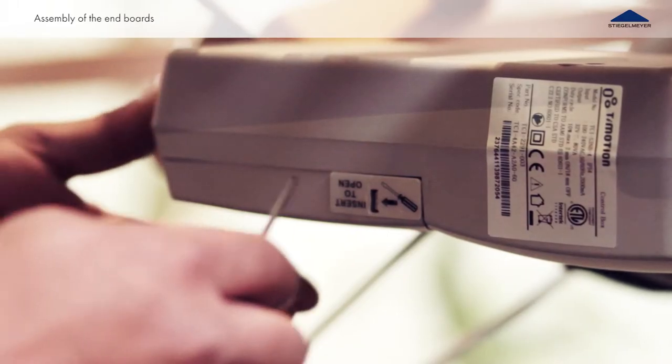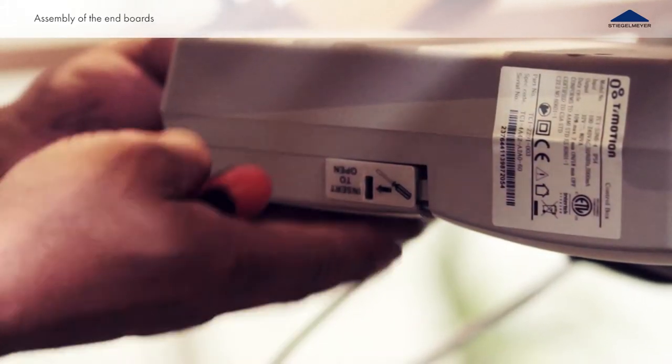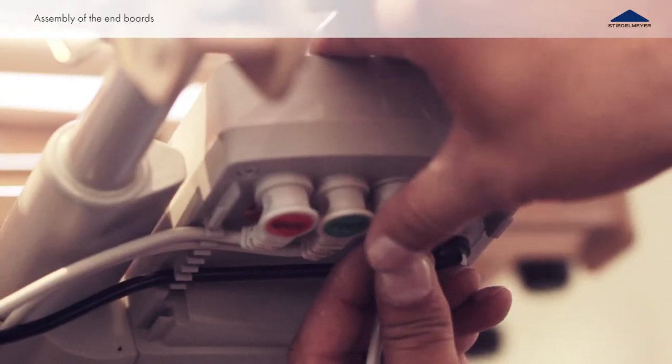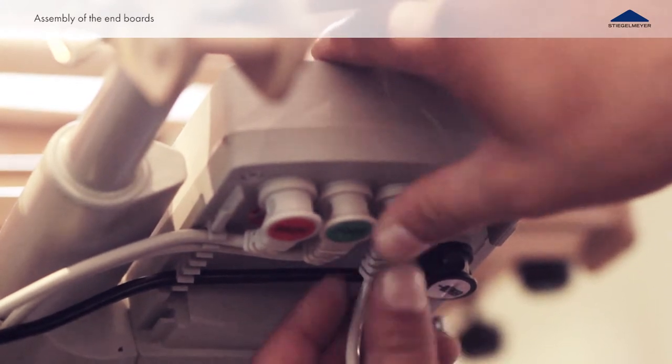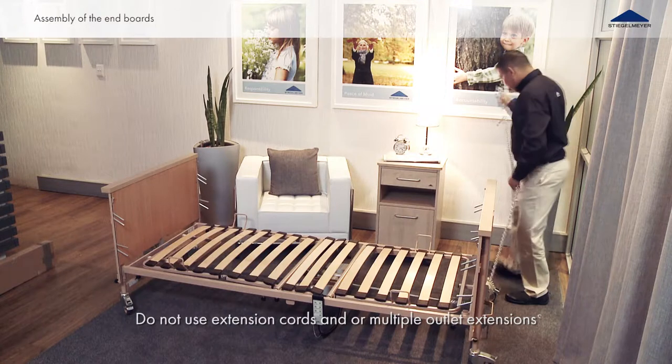Connect the high-low actuator cables from both the head and foot sides to the control box located underneath the lying surface. Connect the bed directly to a wall outlet.